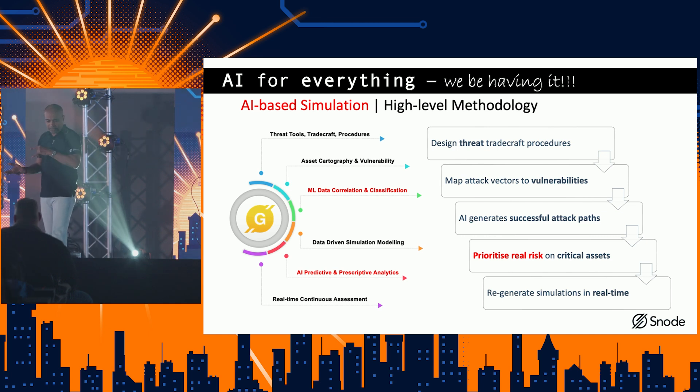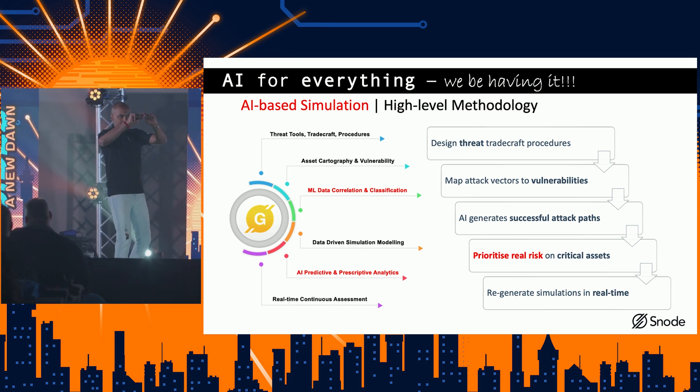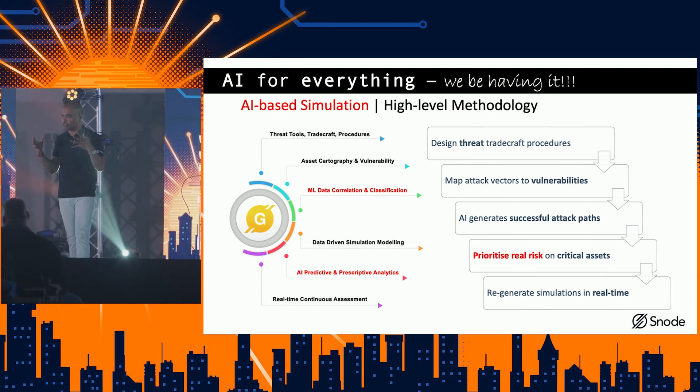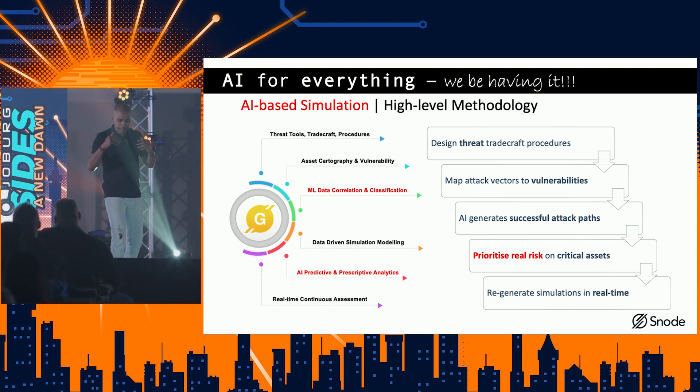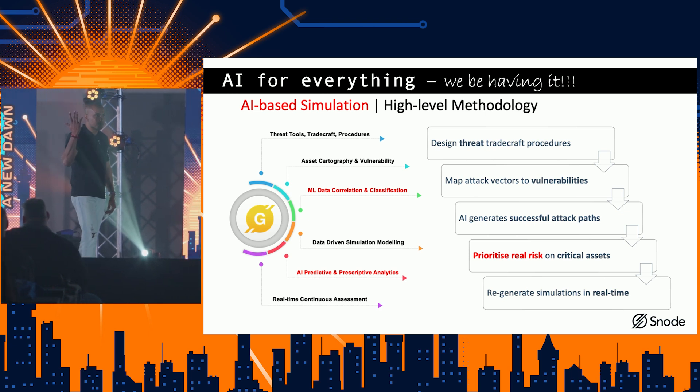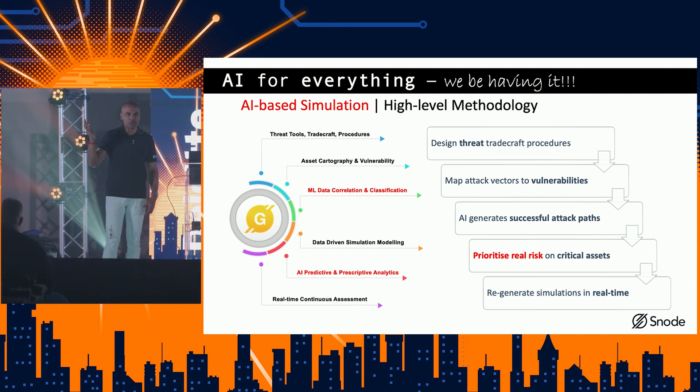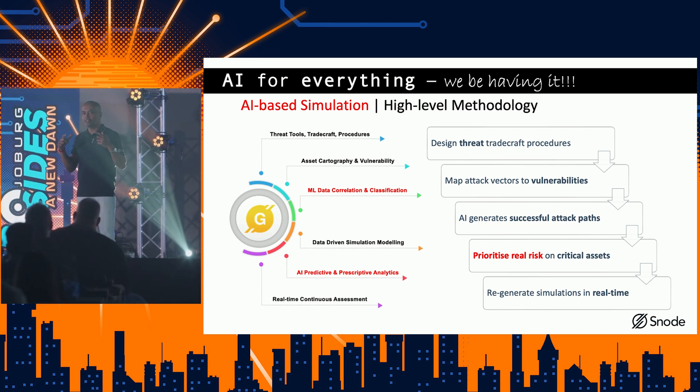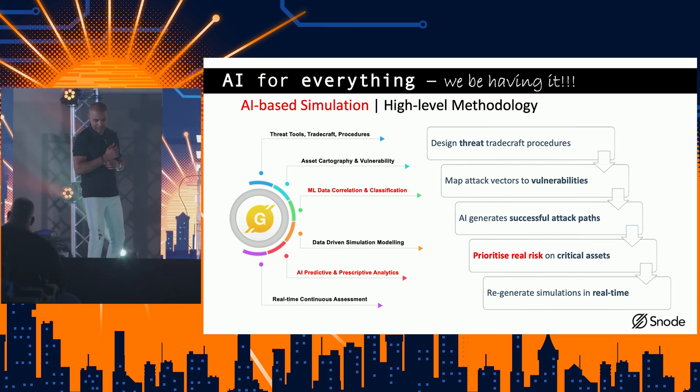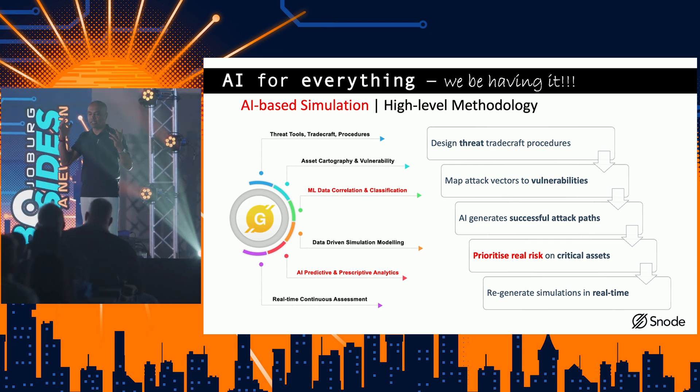So I'm a big fan of taking the manual process that you've been using for years, like threat hunting, and then trying to automate that. So design the threat procedure of all the active threats. Let's take human-operated ransomware groups, Blackbuster, Lockbird, et cetera, mapping their kill chains, looking at vulnerabilities they're using, then map those vulnerabilities to my environment, and then start drawing successful attack paths. And like any pen tester, where will I draw my successful attack path to Active Directory?